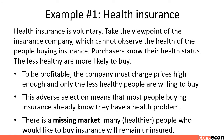Example 1: Health Insurance. Health insurance is voluntary. From the viewpoint of the insurance company, which cannot observe the health of people buying insurance — purchasers know their own health status, so the less healthy are more likely to buy. To be profitable, the company must charge high prices, meaning only the less healthy are willing to buy. This adverse selection means most people buying insurance already know they have a health problem. There is a missing market: many healthier people who would like insurance will remain uninsured.